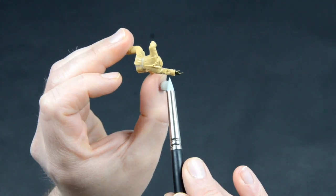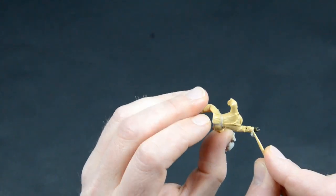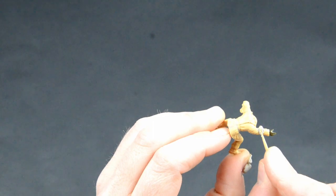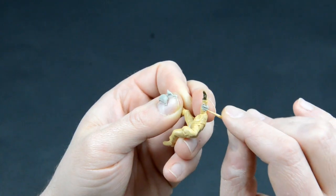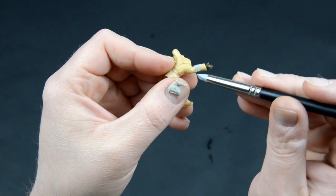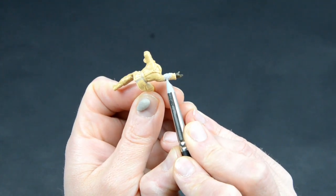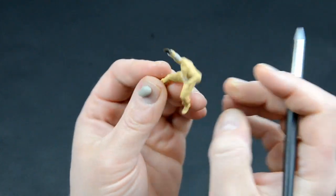We will also use the clay to fill the missing part of the arm. Take a piece of clay and slowly work it into the hole with a toothpick. When you are happy, again smooth things up with a wet silicone brush. At the end, you can sculpt some folds that follow the uniform.